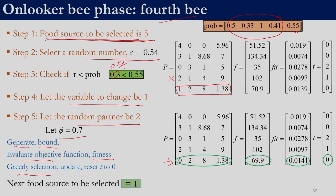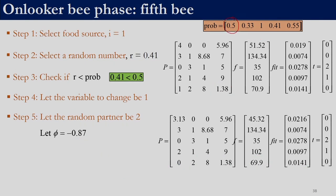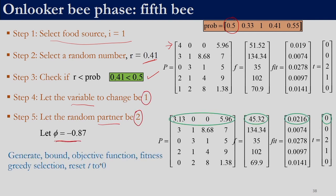For the fifth bee considering food source 1, random number 0.41 < probability 0.5, so the condition is satisfied. Selecting variable 1 and the second solution as partner with phi = -0.87, we generate a new solution that is better. The better solution replaces the previous one, with only x1 changed. That completes the onlooker bee phase.